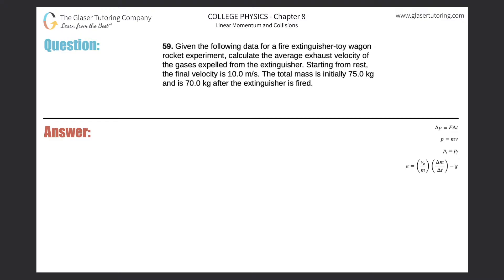Number 59. Given the following data for a fire extinguisher toy wagon rocket experiment, calculate the average exhaust velocity of the gases expelled from the extinguisher. Starting from rest, the final velocity is 10 meters per second. The total mass is initially 75 kilograms and is 70 kilograms after the extinguisher is fired.